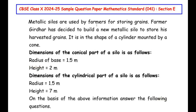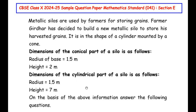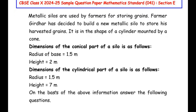Metallic silos are used by farmers for storing grains. Farmer Girdhar has decided to build a new metallic silo to store his harvested grains. It is in the shape of a cylinder mounted by a cone. The dimensions of the conical part of the silo are: radius of the base is 1.5 meters, height is 2 meters. The dimensions of the cylindrical part are: radius is 1.5 meters and height is 7 meters.